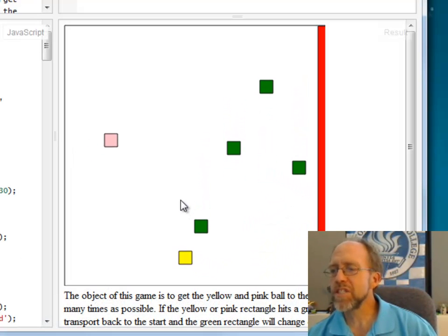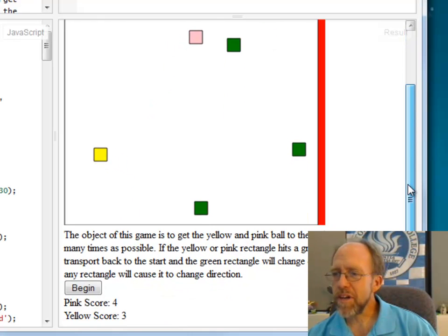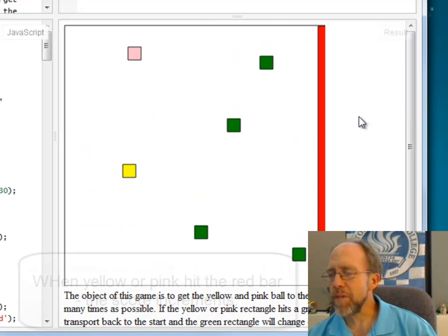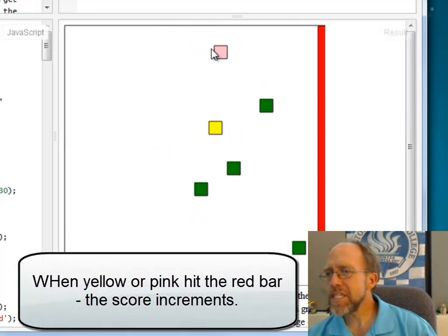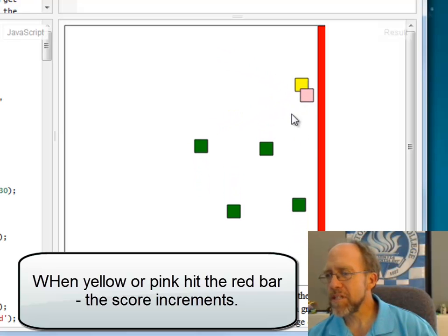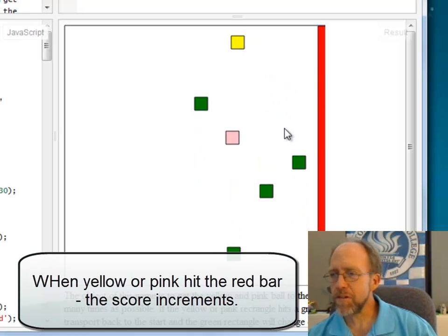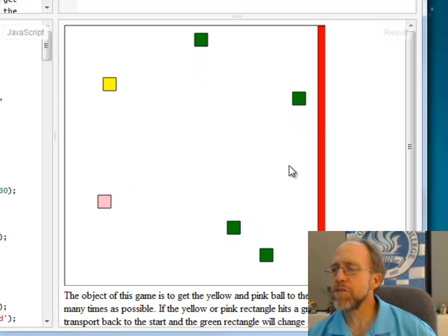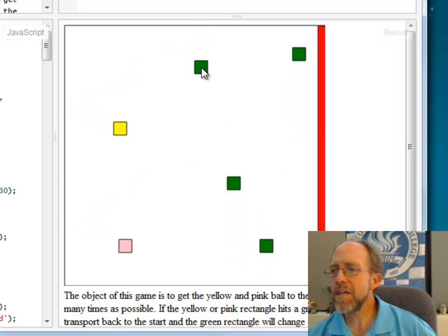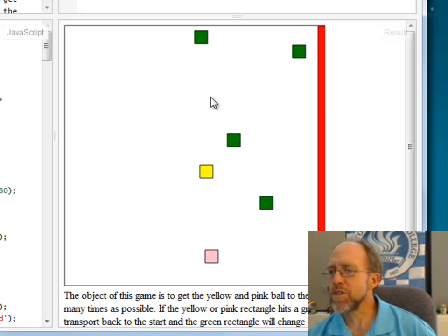You're going ahead and moving that score up, and if I go down here, so the pink is now four and the yellow is three. When one of these yellow or pink ones, my scoring rectangles, touch a green rectangle, the green rectangle will change direction, and if I click on a green rectangle, it'll change direction.